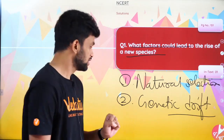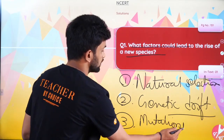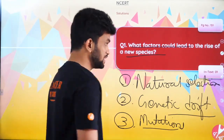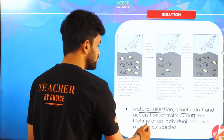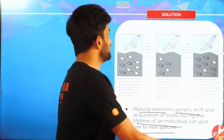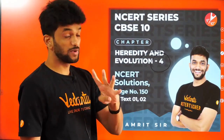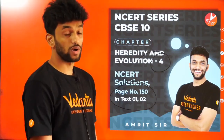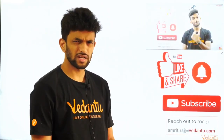Apart from natural selection and genetic drift, mutations can also lead to the rise of a new species. Acquired characters cannot be passed on, but mutations can be passed on. So the factors leading to the rise of a new species are: natural selection, genetic drift, and mutations. Today we covered page 150 in-text question 3 and page 151 in-text question 1.